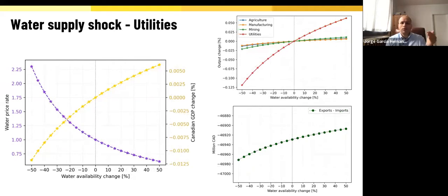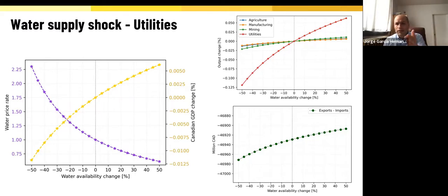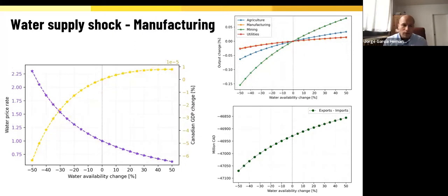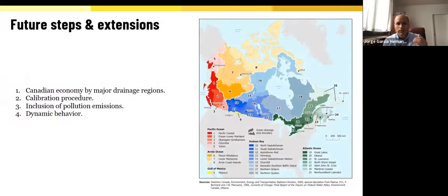We can also do sector-wise shocks. For example, in the case of utilities, that sector is very sensitive to changes in water, which is expected because water is a main component of utilities. Similarly, manufacturing can also be subject to these sector-wise shocks.